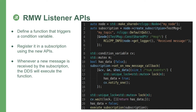After setting the RMW listener API, we wait on the condition variable until it is triggered. Once triggered, we know the subscription has some work to do, so we call the standard execute subscription function — which is also what executors do after searching entities in a wait set. It's very important to notice that the RMW listener API is executed in the DDS context, while the subscription callback will be executed in the executor context. Because of this, they should return very quickly to avoid blocking other parts of the system.